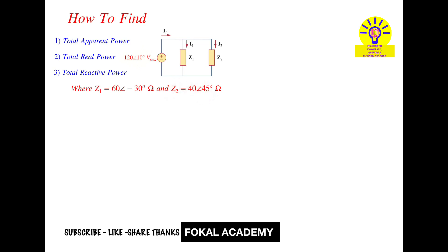The problem asks how to find apparent power, real power, and reactive power for the given circuit. Observing the circuit carefully, the two impedances Z1 and Z2 are in parallel and connected to a voltage source of 120 at phasor angle 10 degrees, which is an RMS voltage.